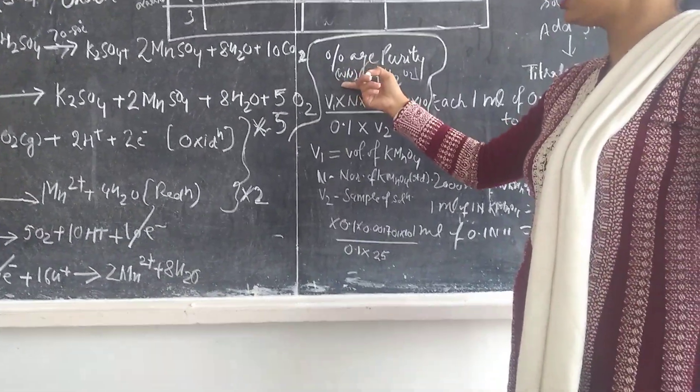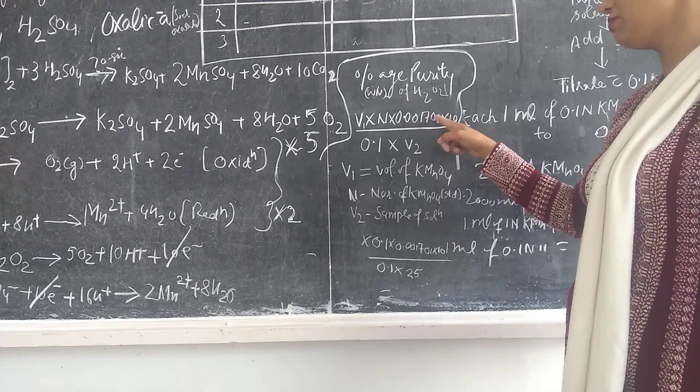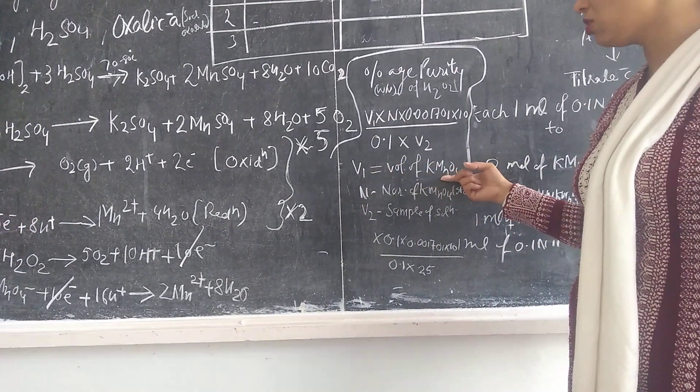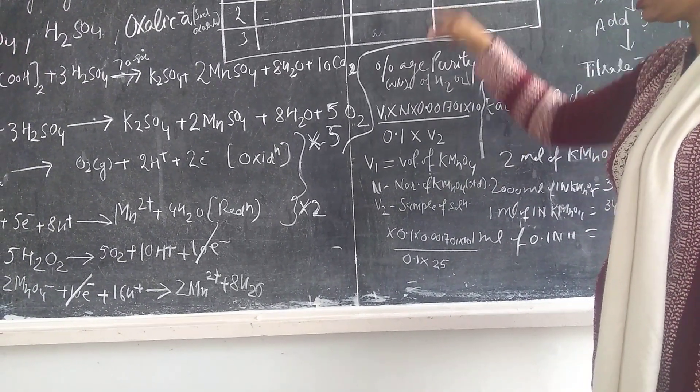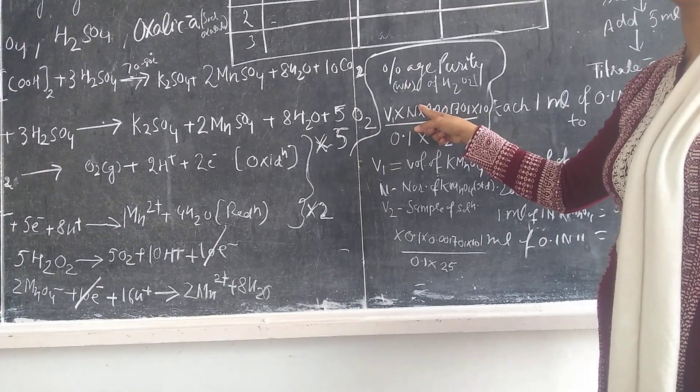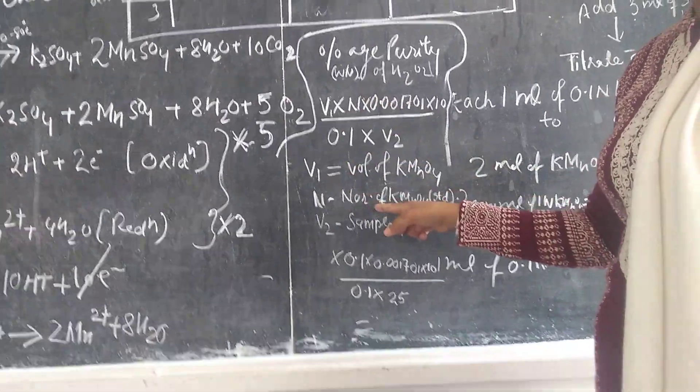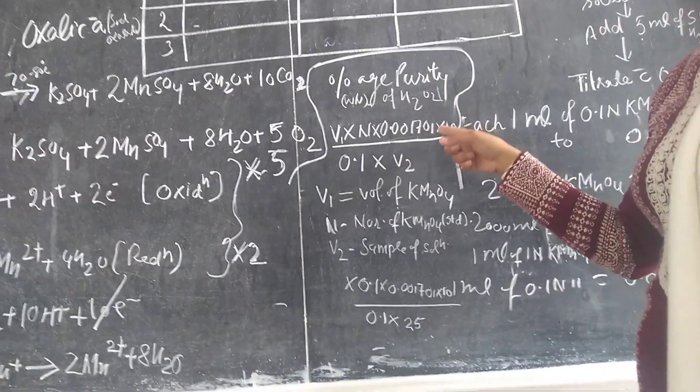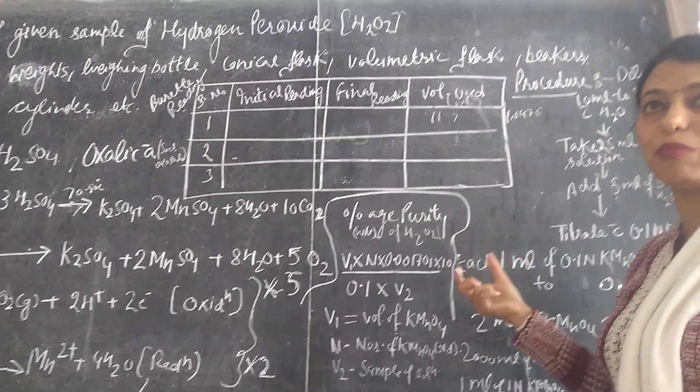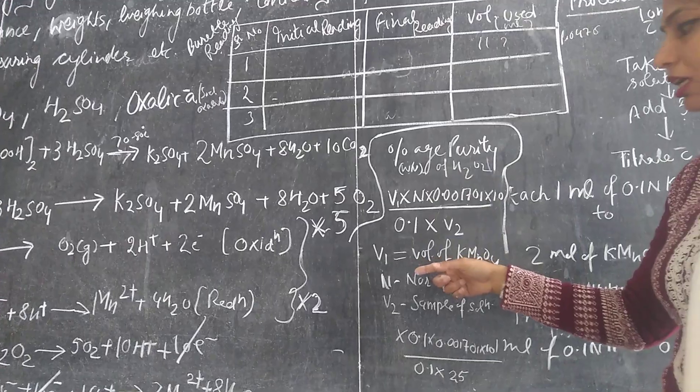Then at last there is the percentage purity of your hydrogen peroxide. These are the calculations we are having. Percent purity in the form of weight by volume: V1 × N × 0.001701 × 10 divided by 0.1 × V2. V1 is volume of KMnO4 that comes from your burette reading. N is the normality of KMnO4 which is after standardization.